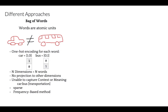Bag of words models suffer from the problem that they do not capture information about the word's meaning or context. Words are treated as atomic units, with no notion of similarity between words, as they are represented as indices in the vocabulary. One of the major disadvantages of bag of words is that it discards word order, ignoring the context.